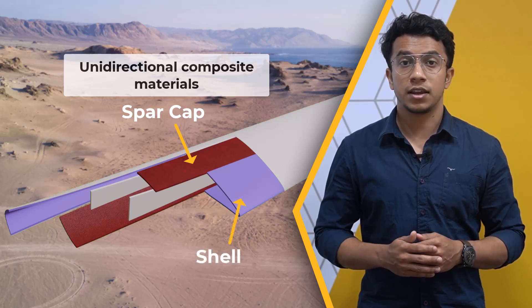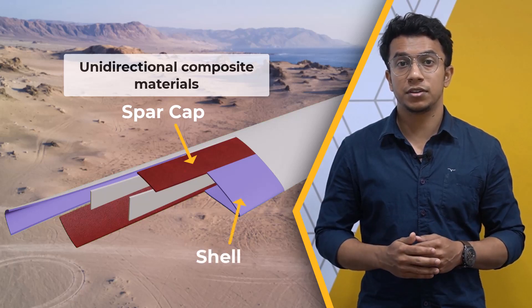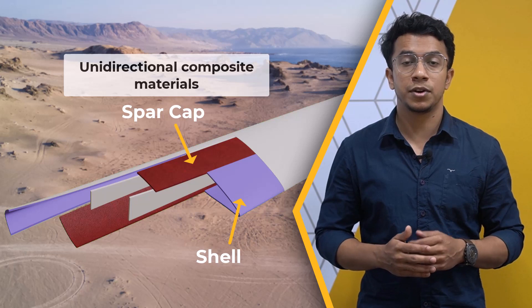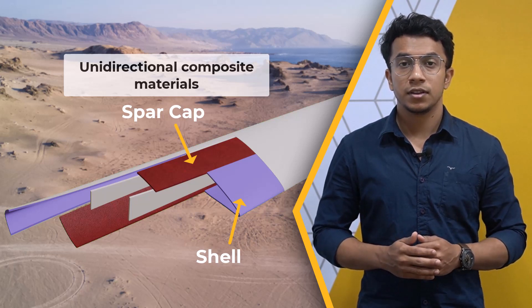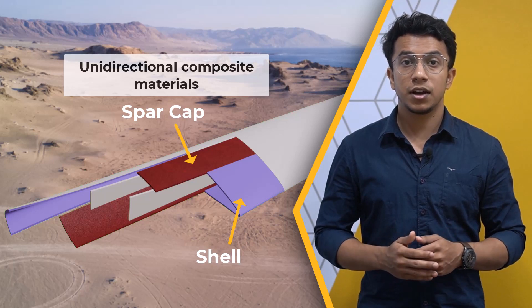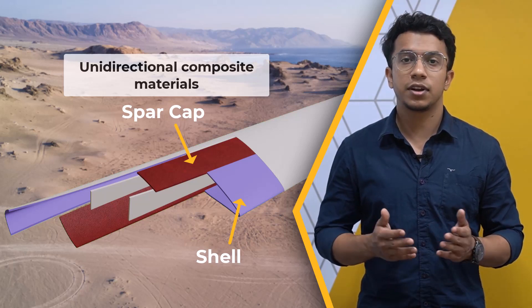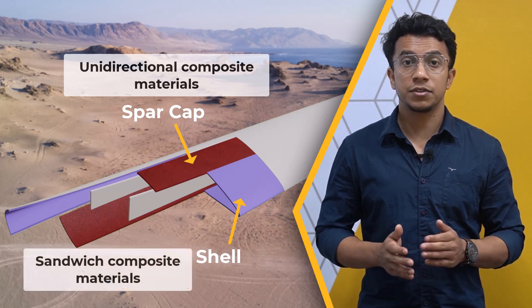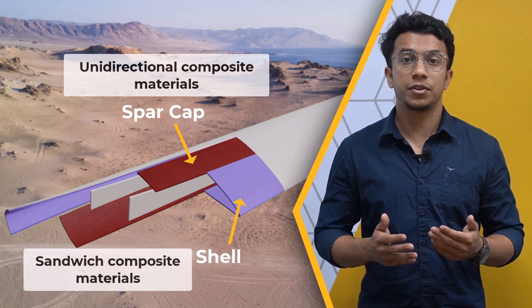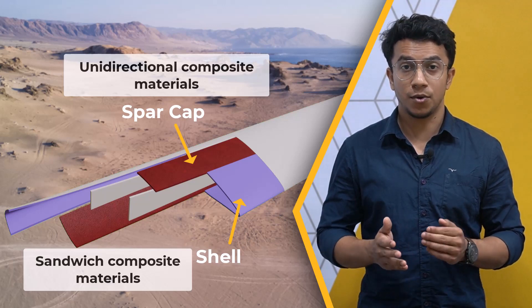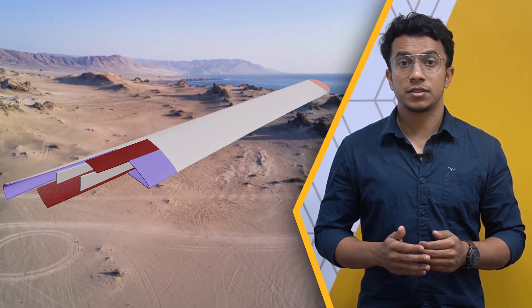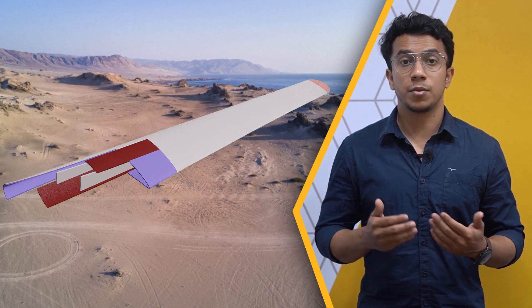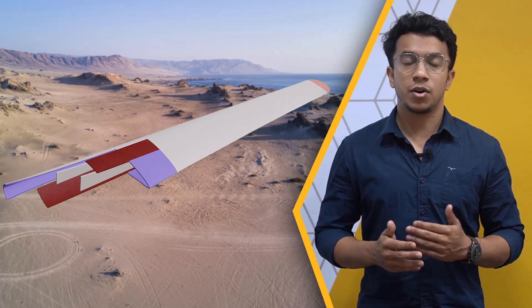The outer shell has an aerodynamic shape to generate the required lift to make the turbine rotate. This aerodynamic surface is subjected to air pressure and needs to withstand buckling from compression and shear. The shell could use a sandwich composite type with core materials made from balsa, foam, or honeycomb. Thus, wind turbine blades are made of different layers of composites, which are one type of layered composites.